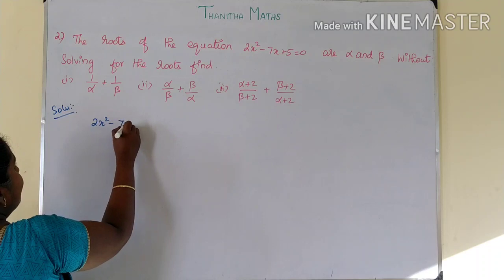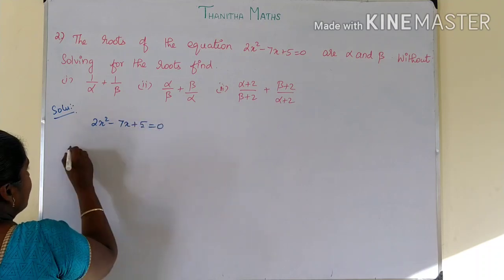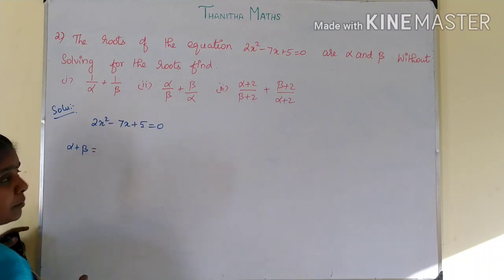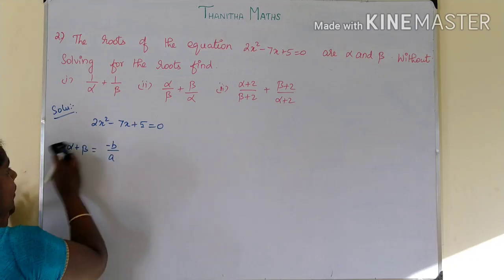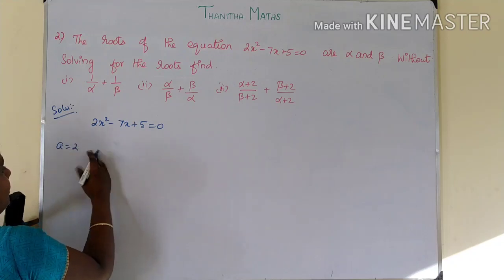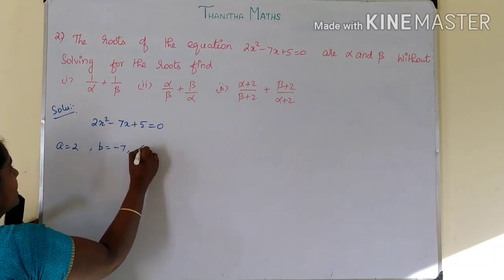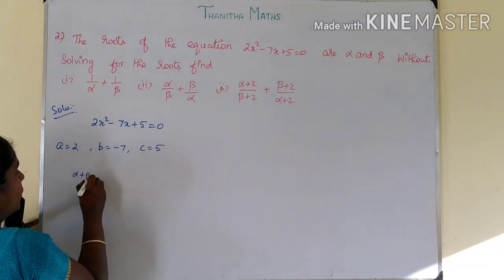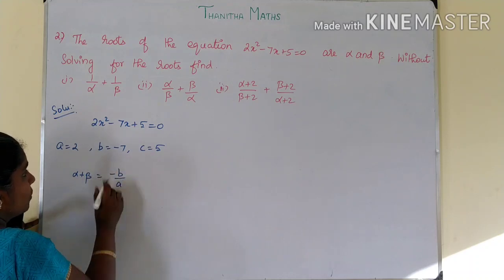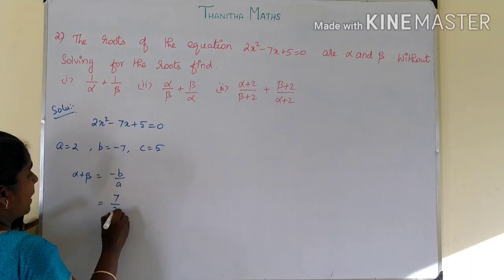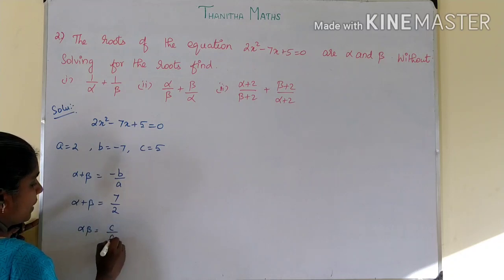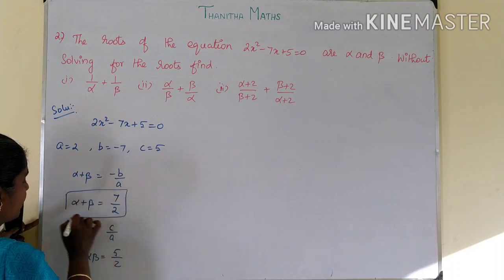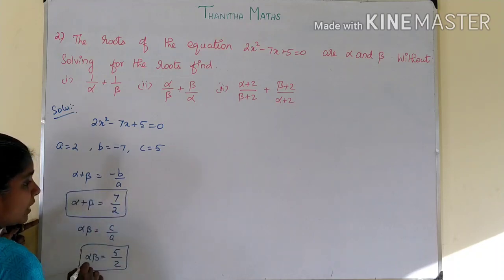For the equation 2x² minus 7x plus 5 = 0, the values are: a = 2, b = minus 7, c = 5. So alpha plus beta equals minus b by a, which is minus(minus 7) by 2, giving 7 by 2. And alpha times beta equals c by a, which is 5 by 2.